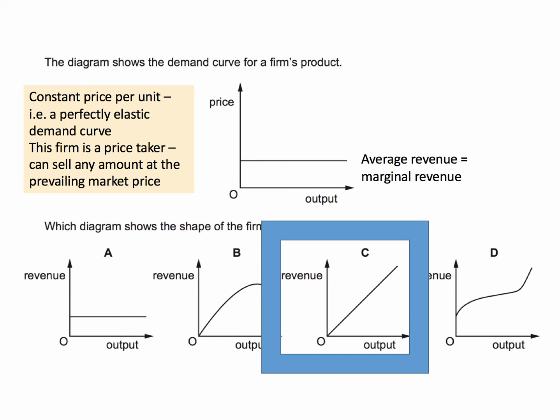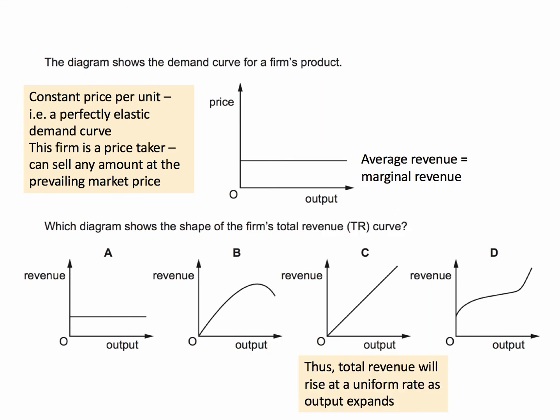The firm is effectively a price taker. It takes the market price and can sell any amount at the prevailing market price. As a result, the total revenue will always increase at a uniform rate that depends on the price as output expands.